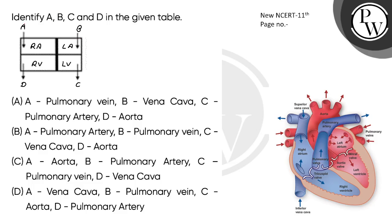Hello, let's read this question: identify A, B, C and D in the given table. Here you have 4 boxes — this is called right atrium, left atrium. You have to identify A, B, C and D.